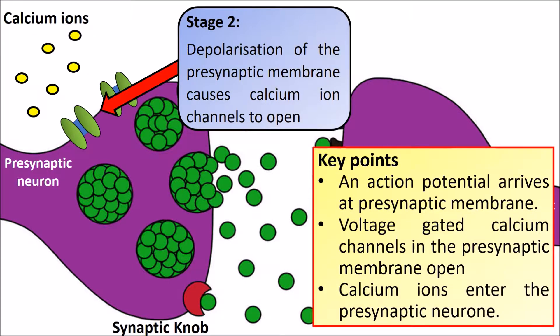There are key points to bear in mind when talking about this, which you will need to mention when answering exam questions. When the action potential reaches the presynaptic membrane, it causes voltage-gated calcium channels in the presynaptic membrane to open. This allows calcium ions to move down the concentration gradient into the presynaptic neuron.